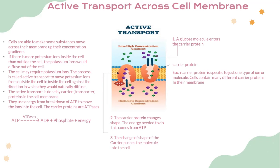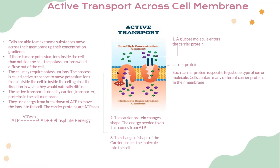Here is how it works: first, the molecule — for example, glucose — enters the carrier protein. Each carrier protein is specific to one type of ion or molecule, and cells contain many different carrier proteins in their membrane. Second, the carrier protein changes shape; the energy needed to do this comes from ATP. Third, the change in shape of the carrier pushes the molecule into the cell.